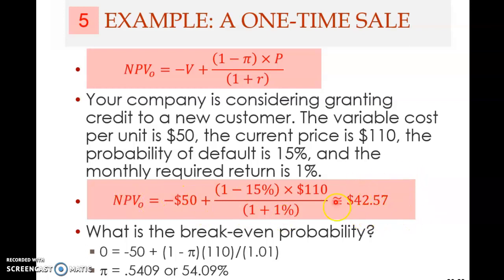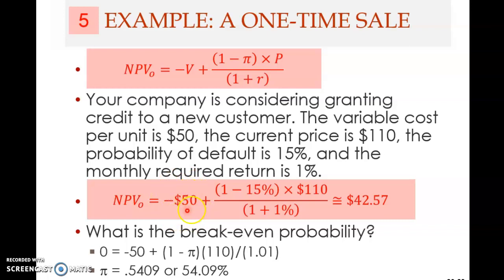The net present value is positive. This shows that the present value of the expected receipt from the customer is more than the cost of the sale now. Therefore, you can provide credit, because the present value of the benefit exceeds the present value of the cost.